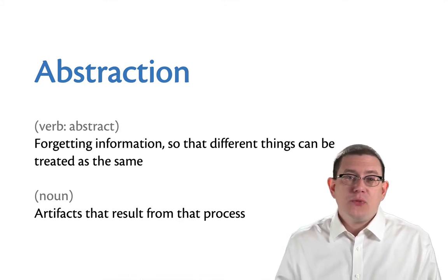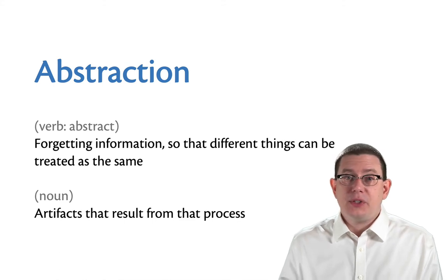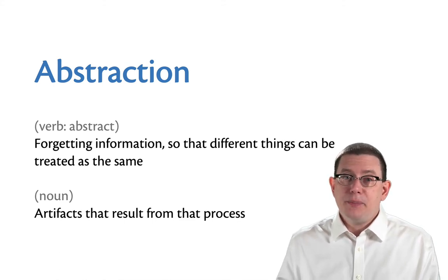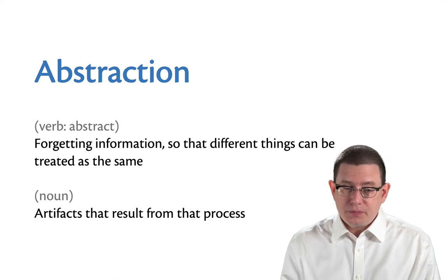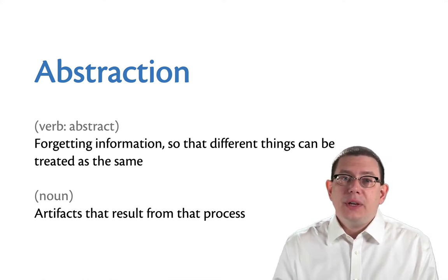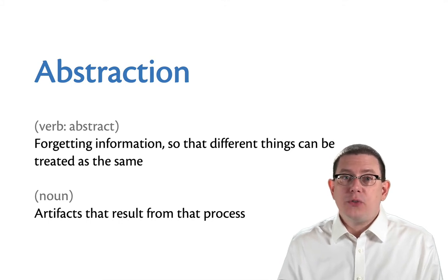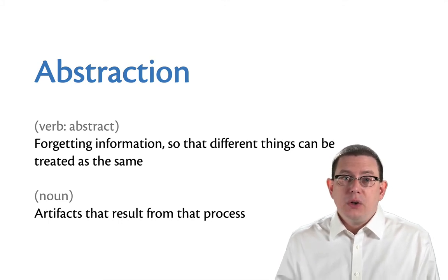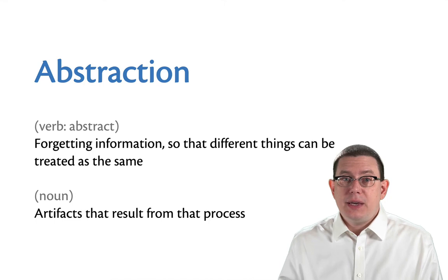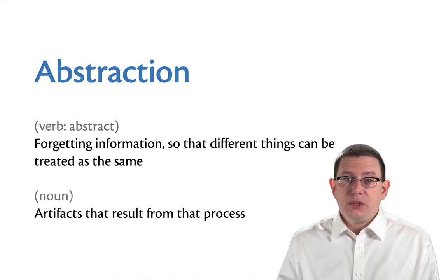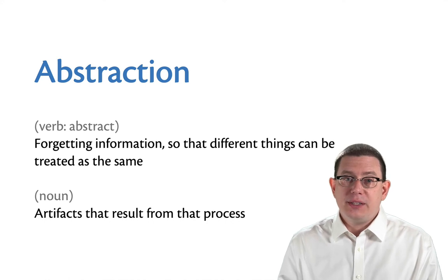That is, you're forgetting about the details that aren't important and focusing on what is important, what the common pieces are. As a noun, abstraction means the artifacts that result from that process. Those artifacts might be functions, or modules, or classes, or whatever your programming language uses to organize its code.